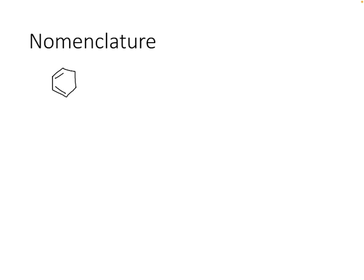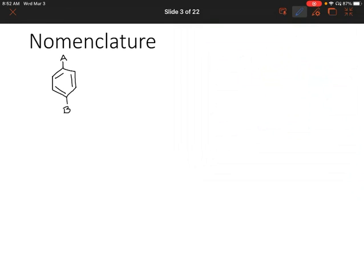We have a few different scenarios that could occur with benzene. In the first scenario, if two substituents A and B are opposite each other, we could number around the ring and say A is at position one and B is at position four. Or we could specify that they're directly across from each other using the word para, abbreviated as P.